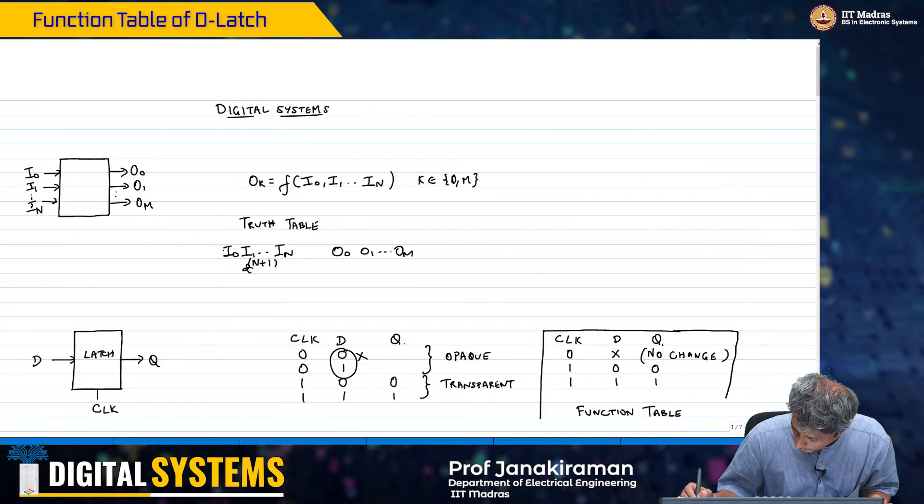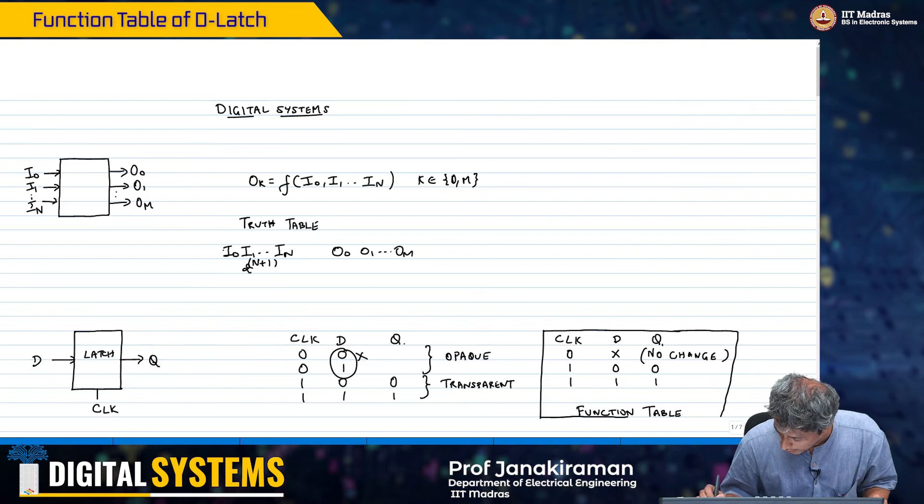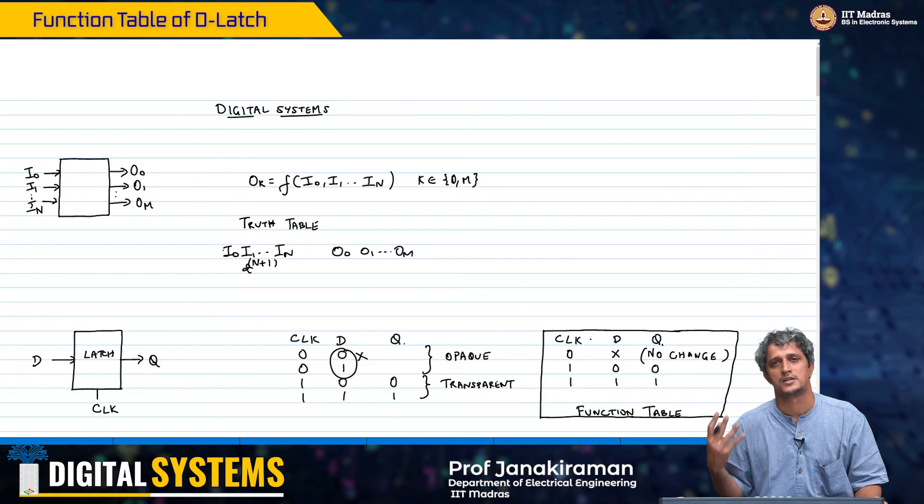But for now, we are just going to stick to this function table. So the equivalent of a truth table for sequential elements is essentially going to be a simple function table.